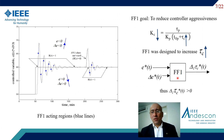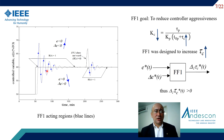FF1 was designed to reduce the controlled aggressiveness by increasing the closed-loop time constant. Blue lines represent the regions where FF1 acts. In those regions, the error and its change have the same sign, above and below the set-point.